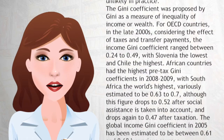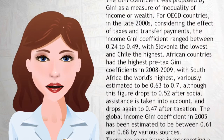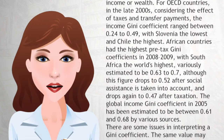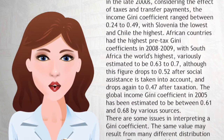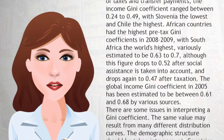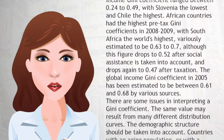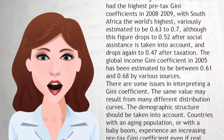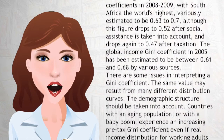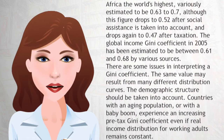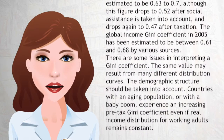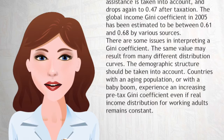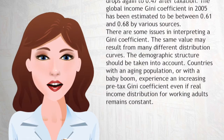African countries had the highest pre-tax Gini coefficients in 2008 to 2009, with South Africa the world's highest, variously estimated to be 0.63 to 0.7, although this figure drops to 0.52 after social assistance is taken into account, and drops again to 0.47 after taxation. The global income Gini coefficient in 2005 has been estimated to be between 0.61 and 0.68 by various sources.